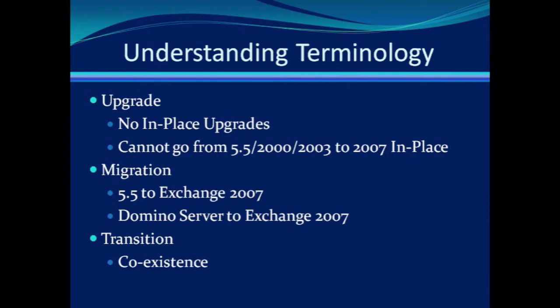This is different from a transition, which can be done from Exchange 2000 or 2003 over to Exchange 2007. With a transition, you can move both mailbox and configuration data to the 2007 organization. Because a transition happens in stages, there is a period of coexistence where you have both legacy Exchange servers and 2007 Exchange servers. That coexistence period can be short or long, depending on your needs.